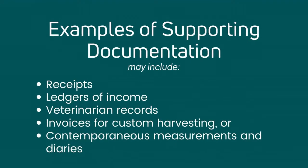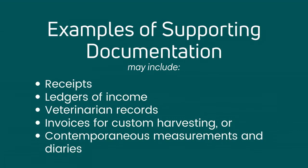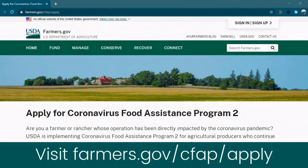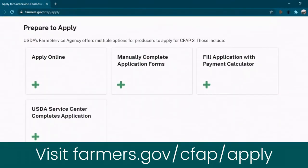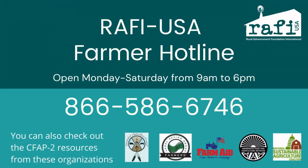Examples of supporting documentation include things like receipts, ledgers of income, veterinarian records, invoices for custom harvesting, or contemporaneous measurements and diaries. To get your CFAP II application started, head to farmers.gov/cfap/apply to access the application portal or to download the application. And if you have additional questions about CFAP II or need assistance with your application, we encourage you to call the RAFI USA Hotline toll-free at 866-586-6746.